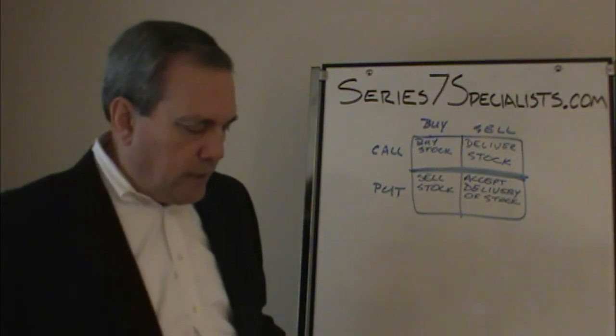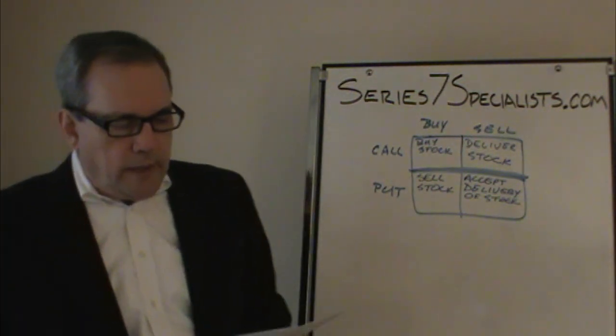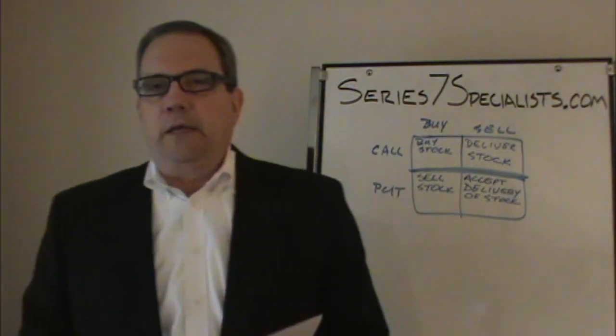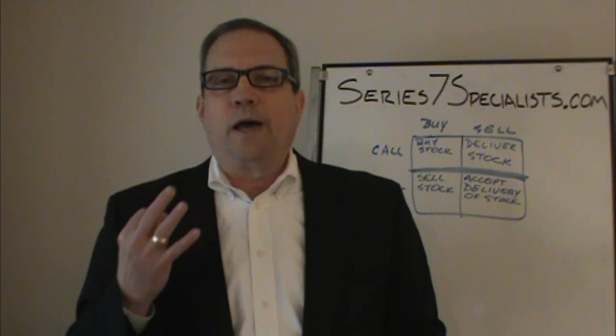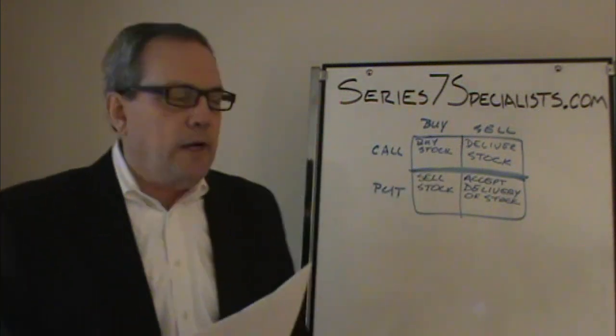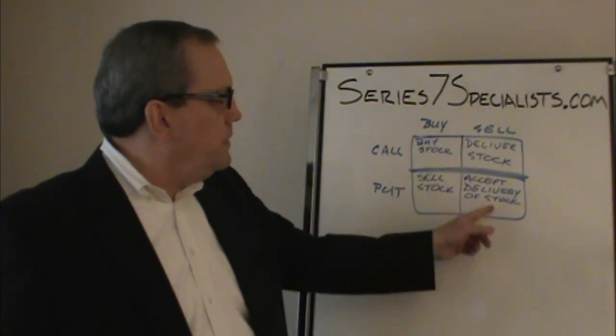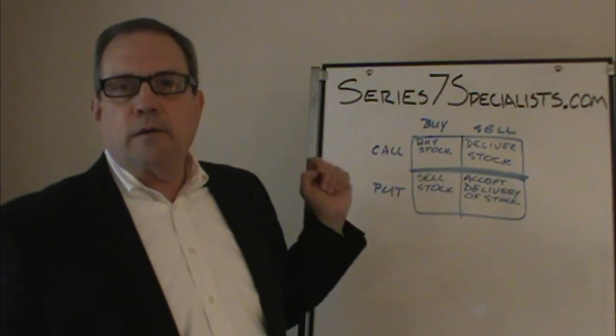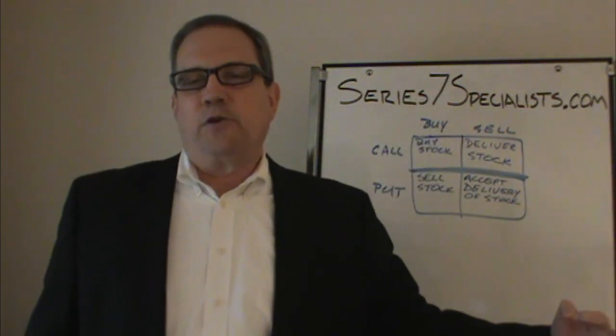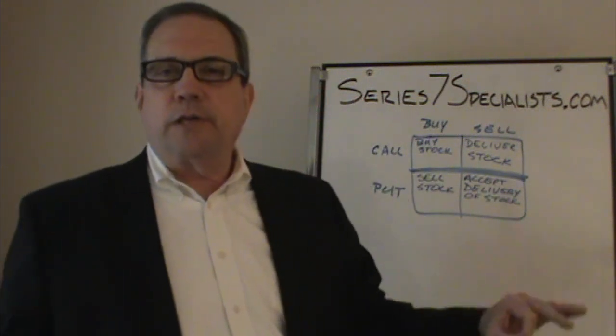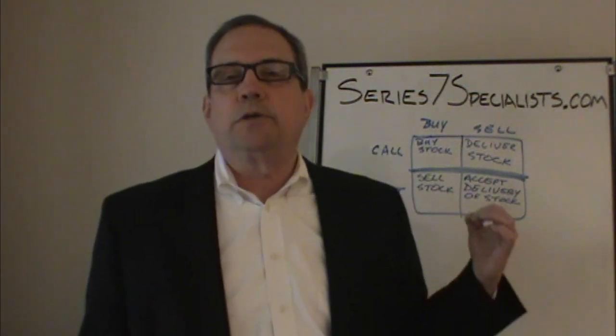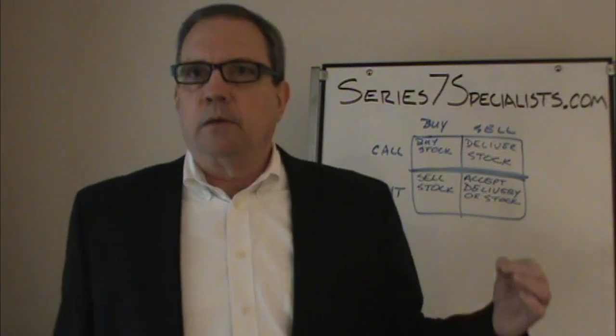A put option is the mirror image where this person can choose to sell stock at a specified price in the contract. This party that has the obligation, that obligation is to accept delivery of the stock at the price specified in the contract. So let's go ahead and look at how contracts can be terminated. Contracts can be terminated in three different ways.